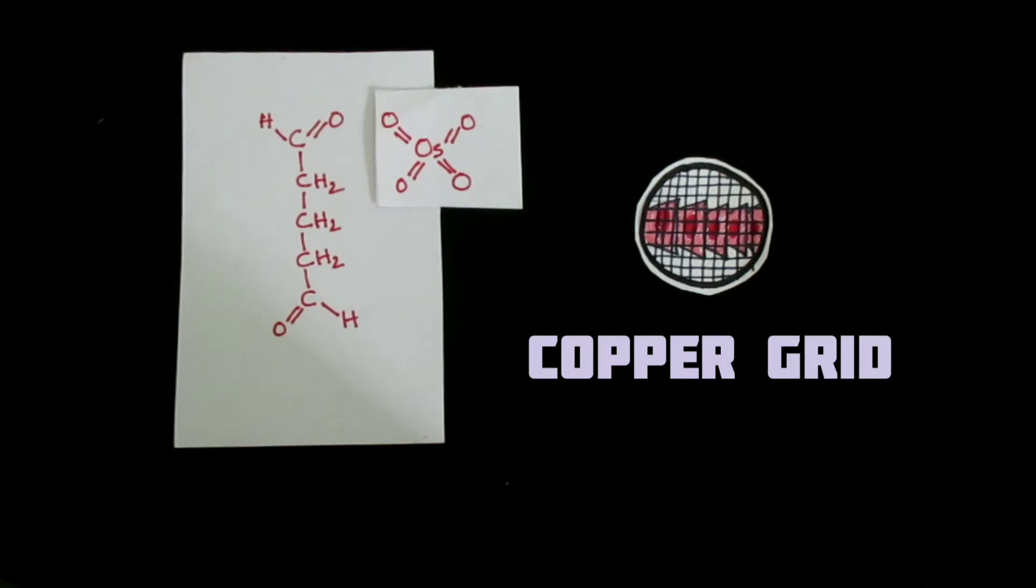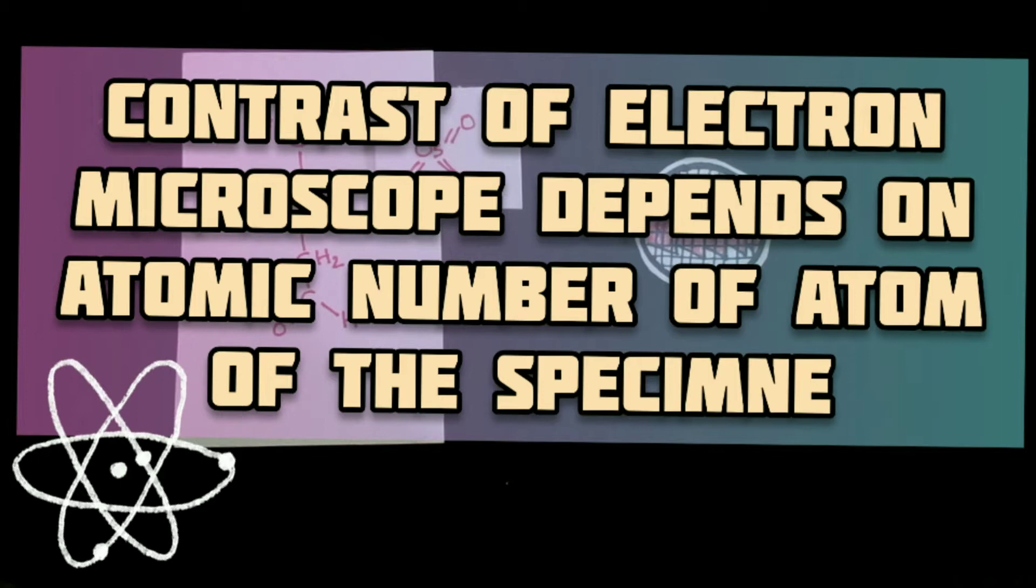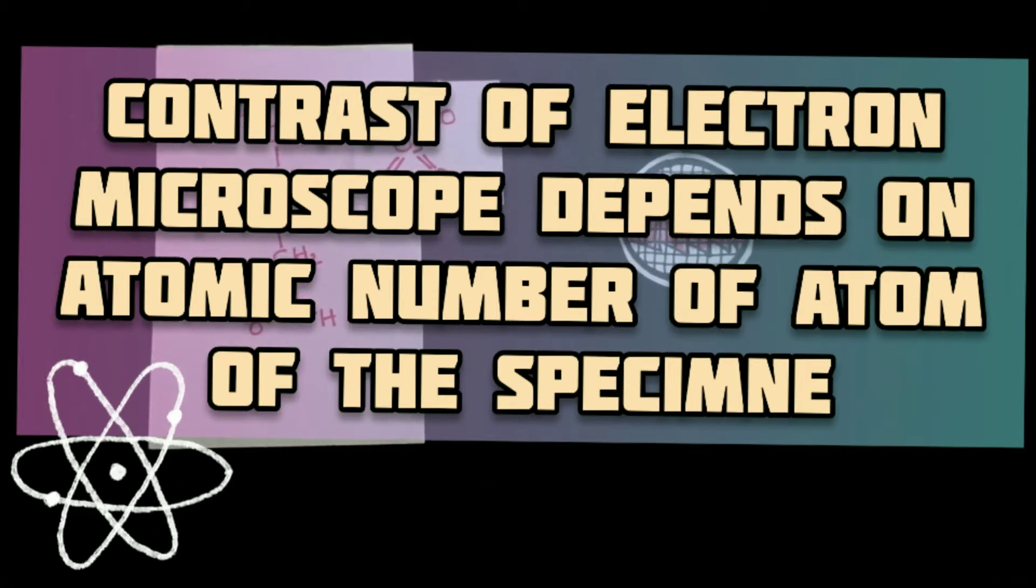Contrast in the electron microscope depends on the atomic number of the atoms in the specimen. The higher the atomic number, the more the electrons are scattered and the greater the contrast.